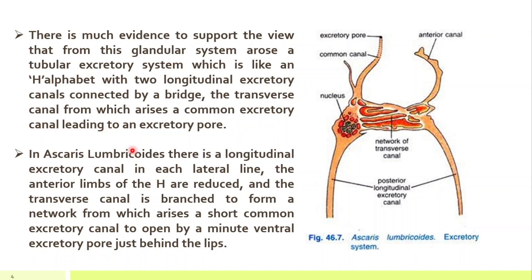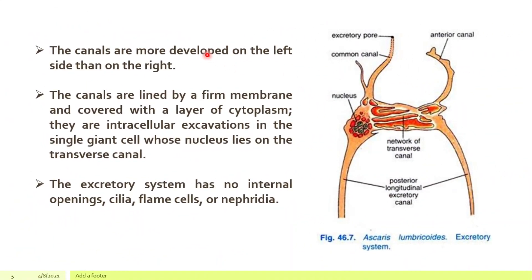In Ascaris lumbricoides, there is a longitudinal excretory canal in each lateral line. The anterior limbs of the H are reduced compared to the posterior canals. The transverse canal is branched to form a network, from which arises a short common excretory canal opening by a minute ventral excretory pore just behind the lips. The canals are more developed on the left side than on the right side, as seen in the diagram.